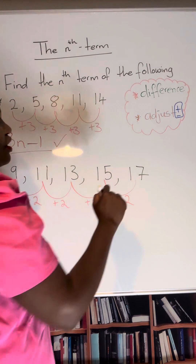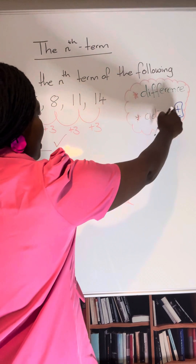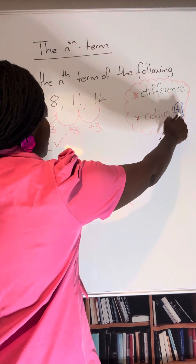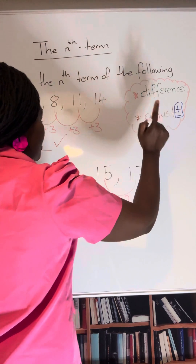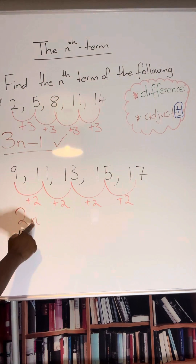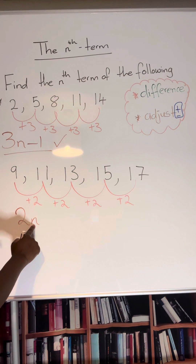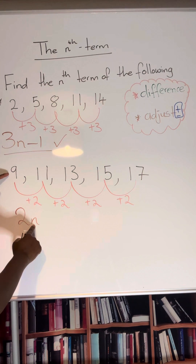Second, you need to adjust — you need to either add or subtract to get to the first term. So if your first term was 1, this would be 2 times 1. But look, your first term is 9.